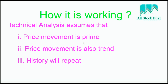Technical analysis has three key principles. First, price movement is prime — whether it is moving up, down, or sideways. Second, price movement is also trend — the price is always moving in some direction, either up or down, not staying constant. Third, history will repeat — once you find a pattern in the charts, it tends to repeat. If you identify the start of a chart pattern, you can predict it will repeat.